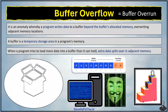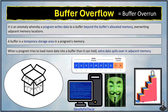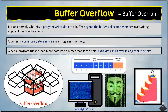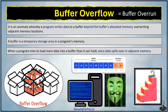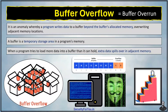For example, imagine a box meant to hold a specific number of apples. A buffer overflow is like stuffing too many apples into that box, but instead of overflowing onto the floor, this extra data spills over into neighboring boxes.